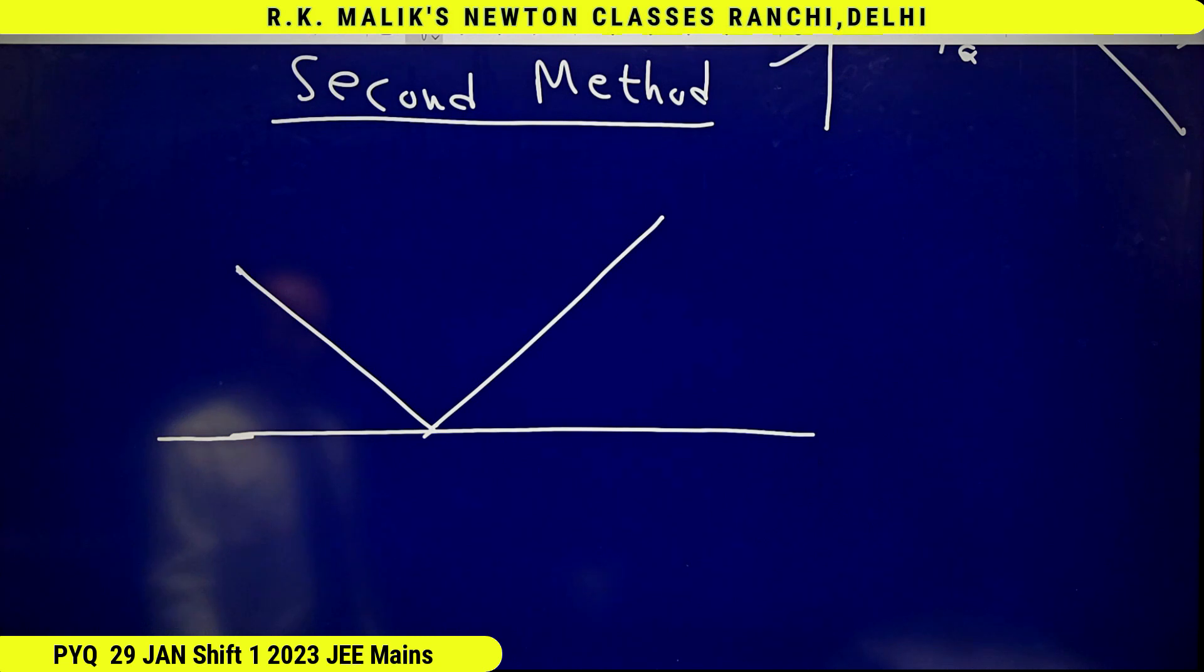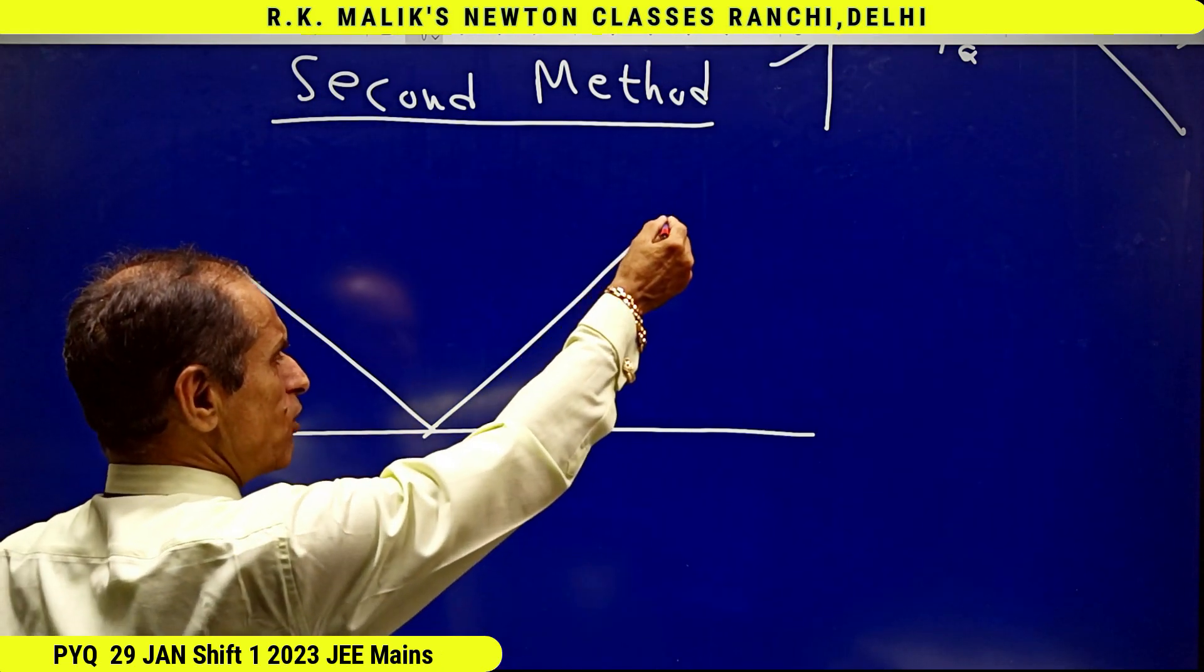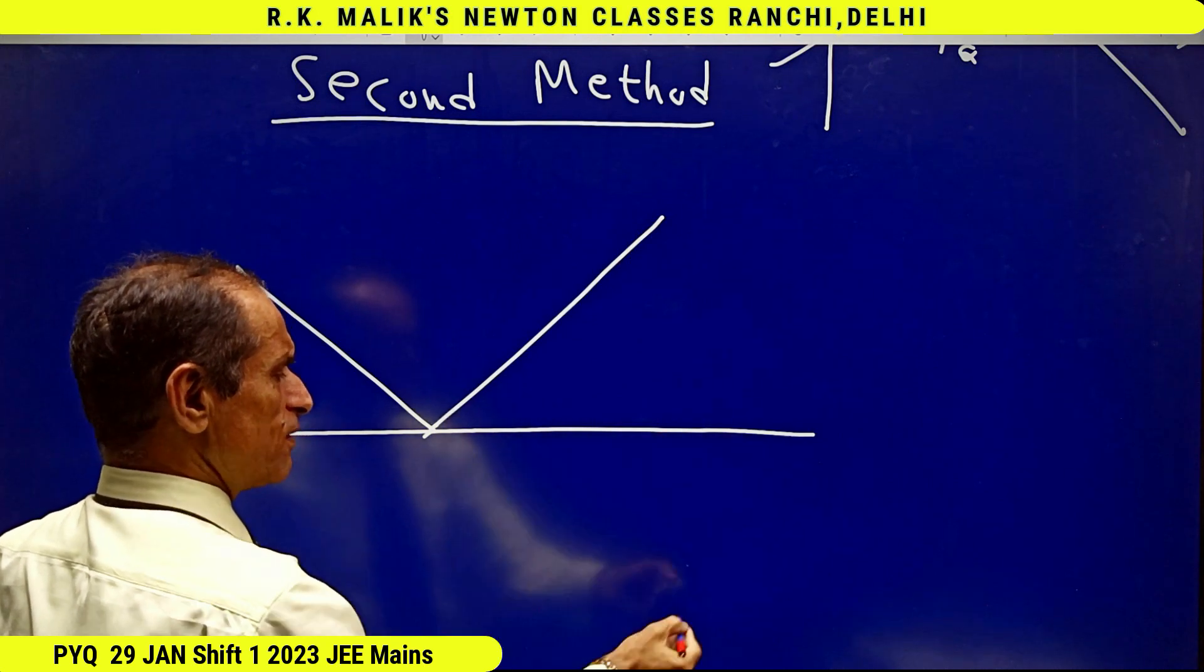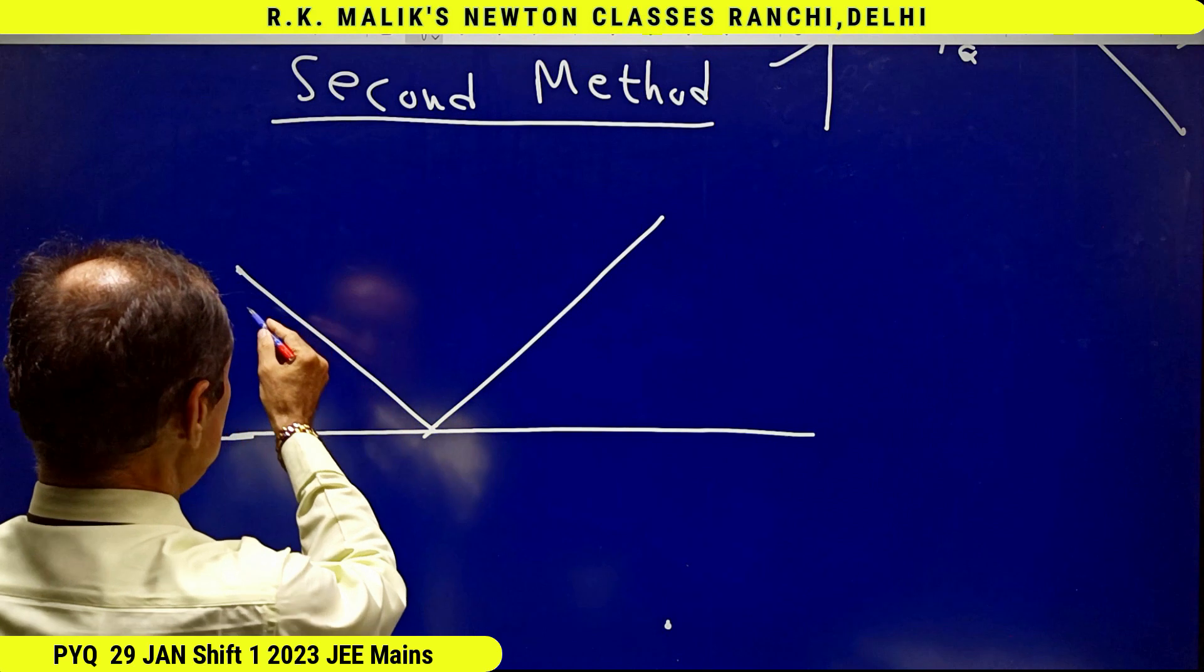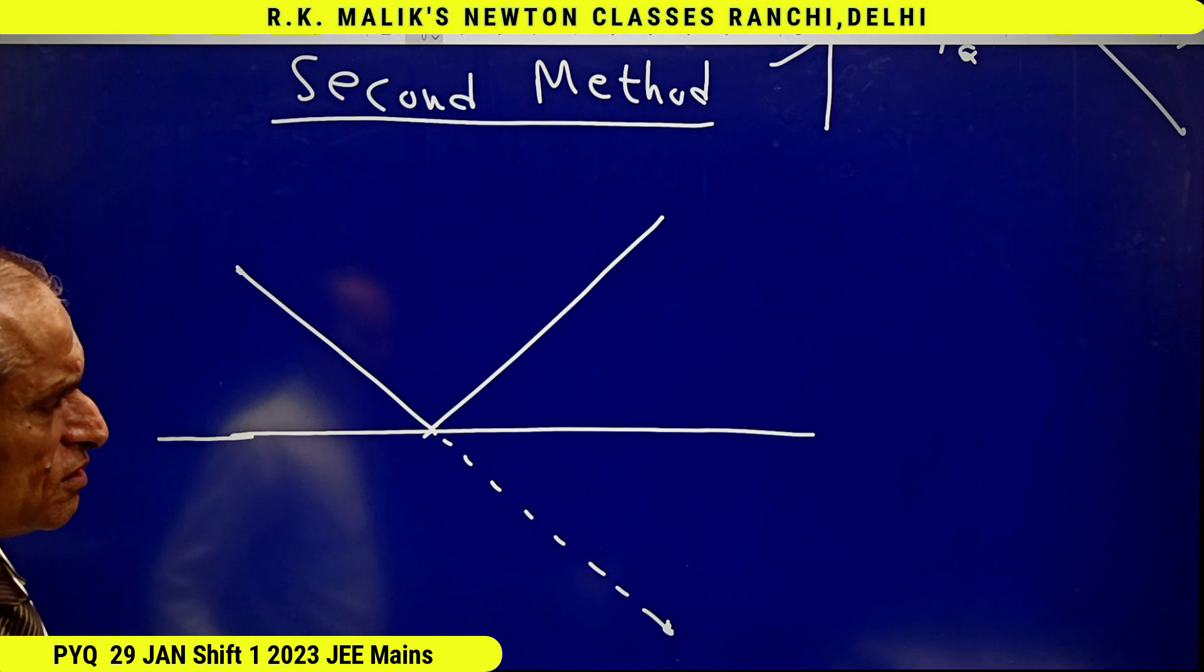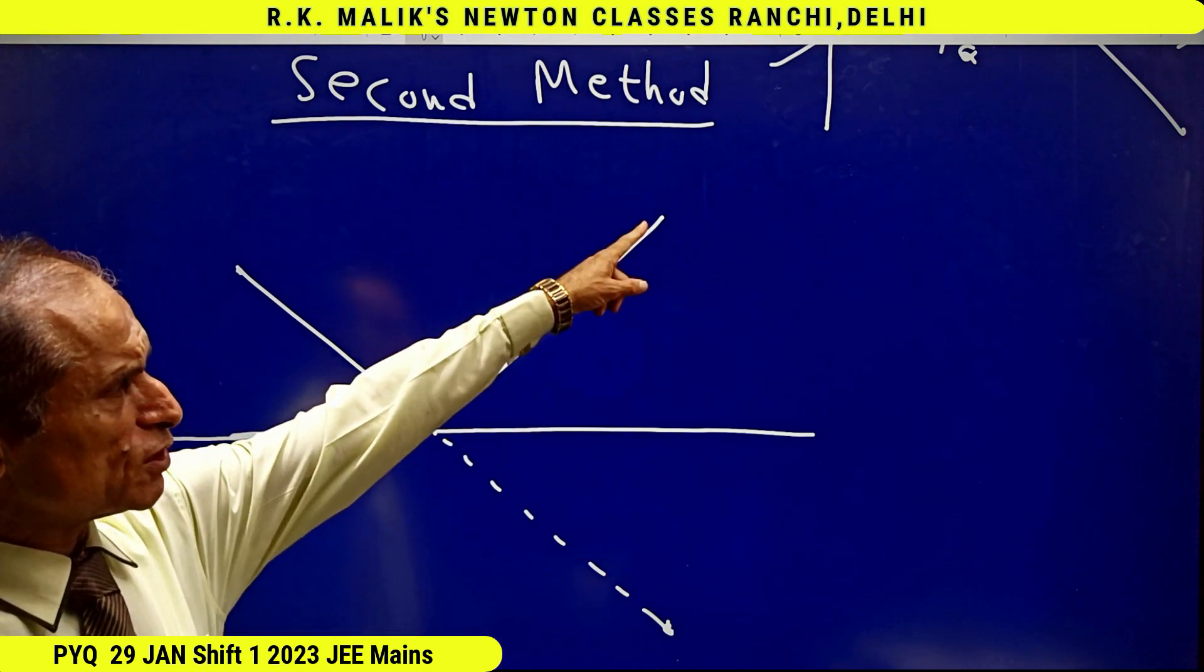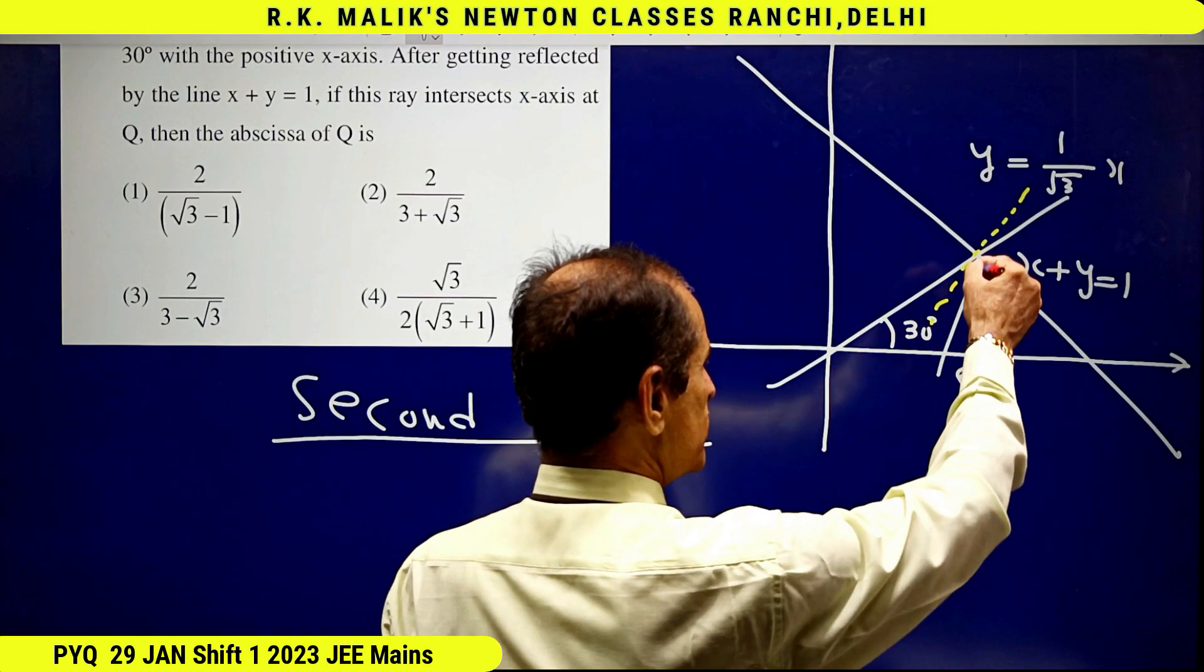And we can also say that if I take the image of this point in this line—that is this point—then if I produce it, this will be passing through this point. This is the image of this point in the reflecting surface. Both concepts are correct. Now, this reflected ray...